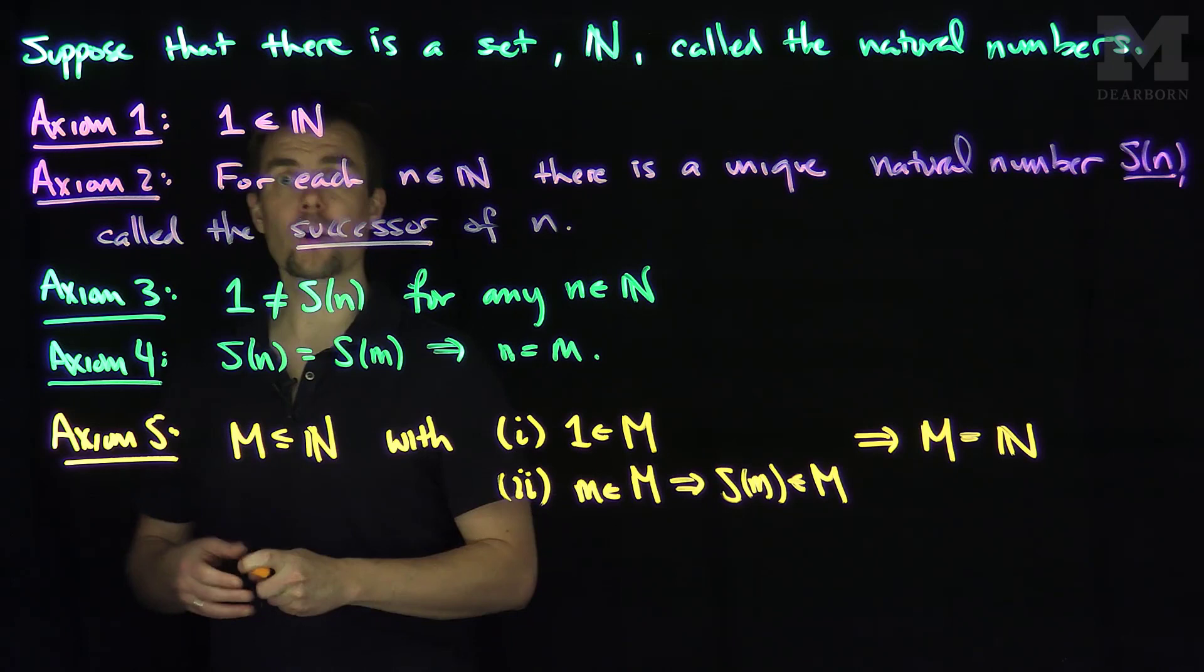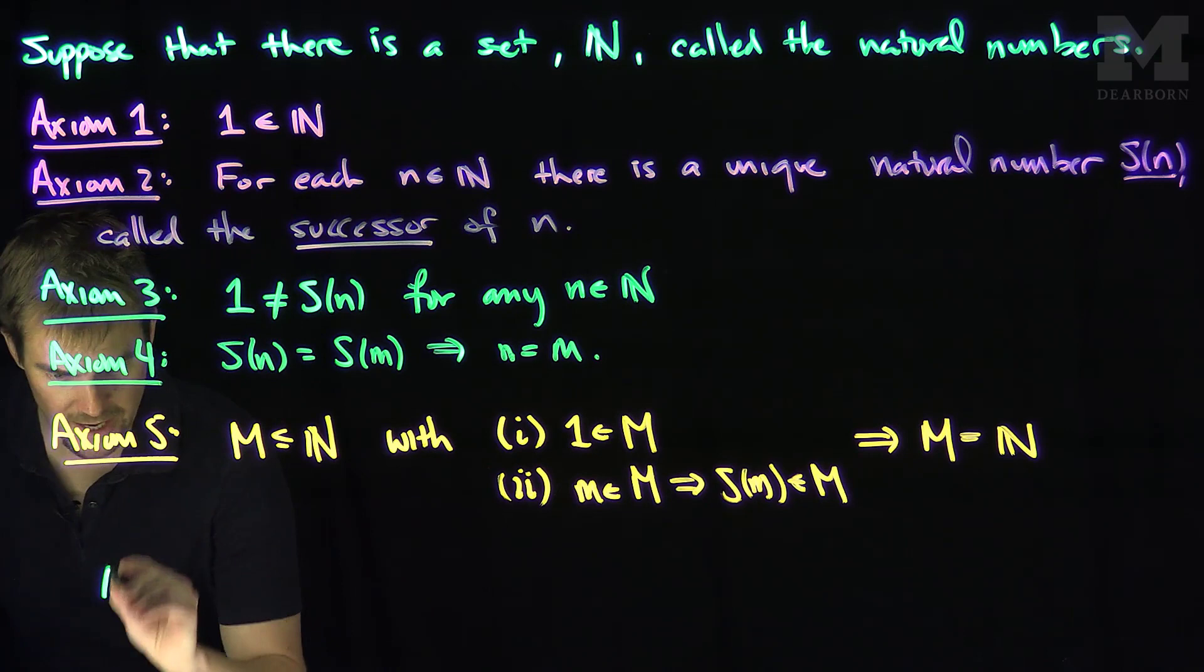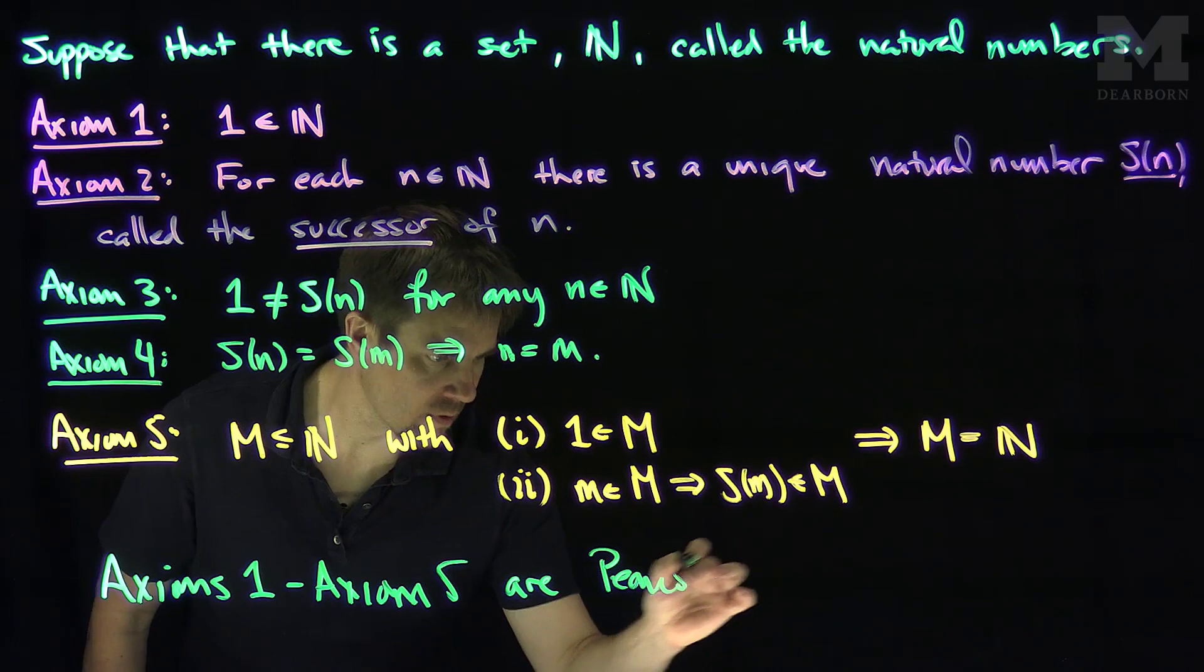These five axioms help us construct all the natural numbers. These axioms are referred to as the Peano axioms—axioms 1 through 5 are the Peano axioms.